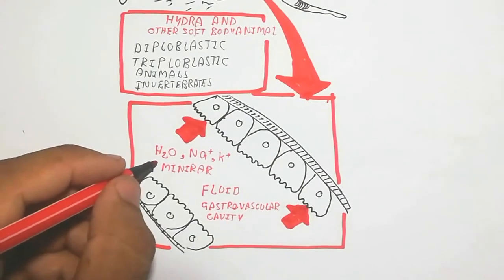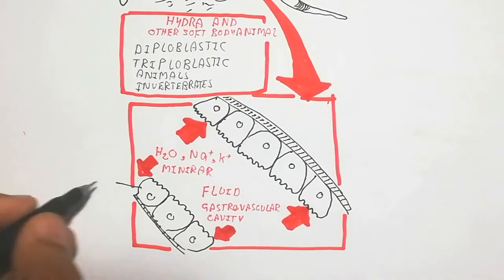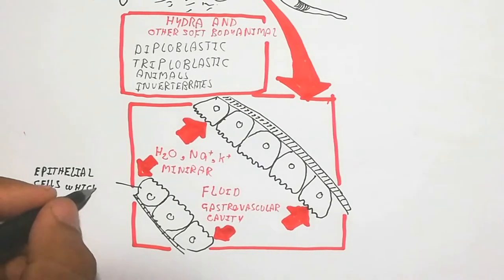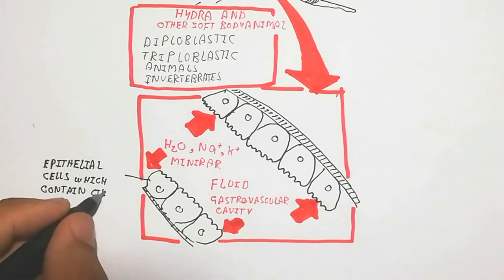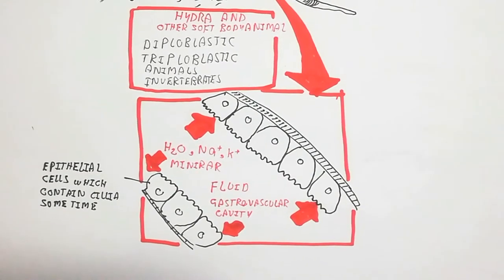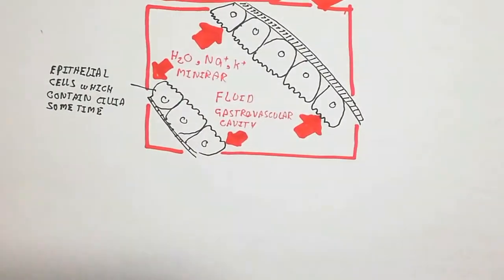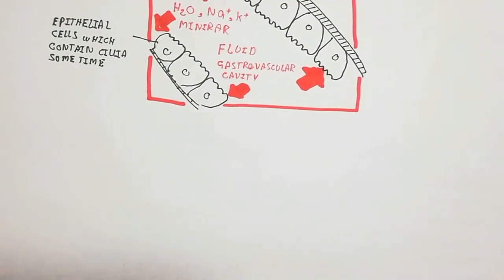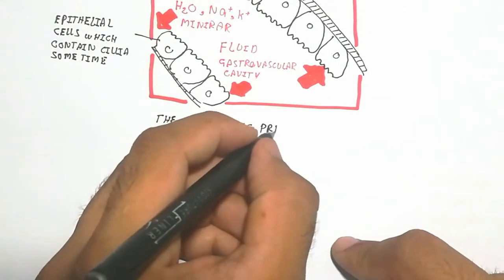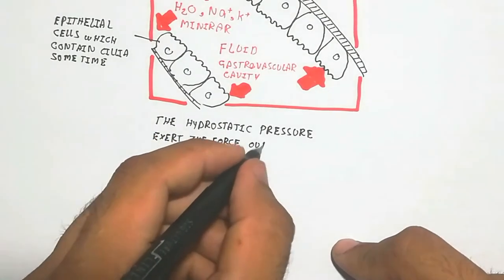Regarding the skeletal system, the pressure created by the fluid-filled cavity produces hardness and rigidity in the animal. This rigidity enables movement in water or outside of water — for example in the earthworm. The hydrostatic pressure exerts force outward due to the water pressure present inside the animal.